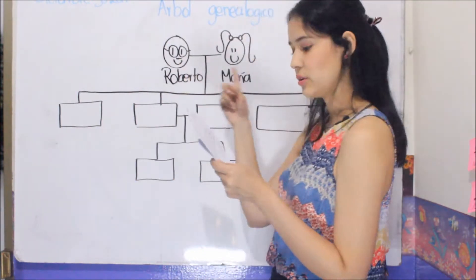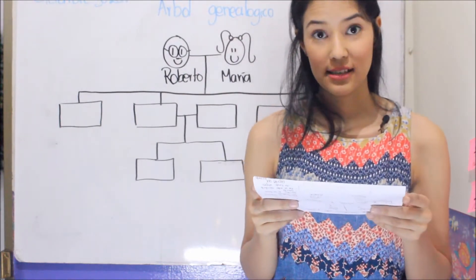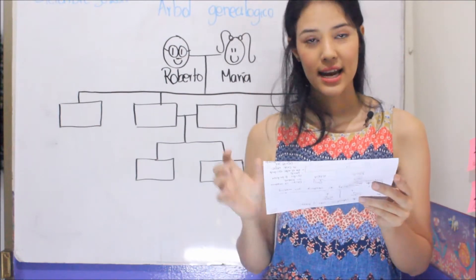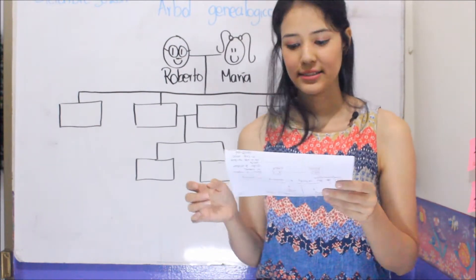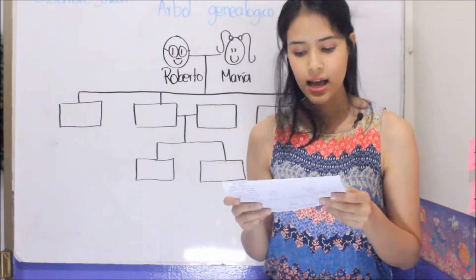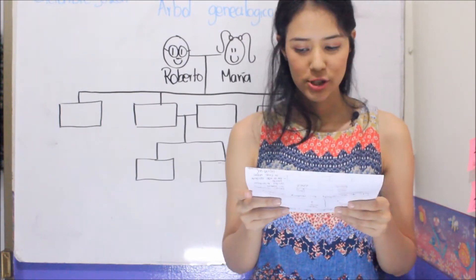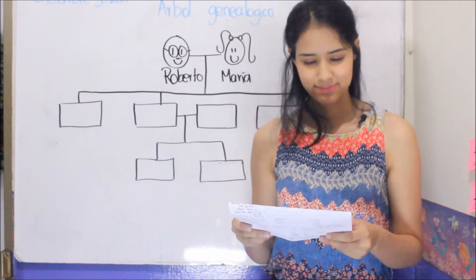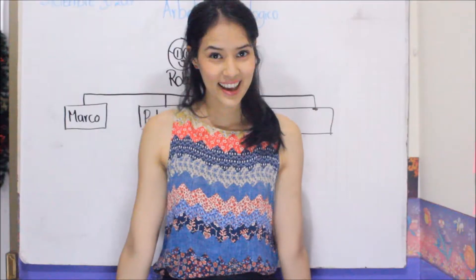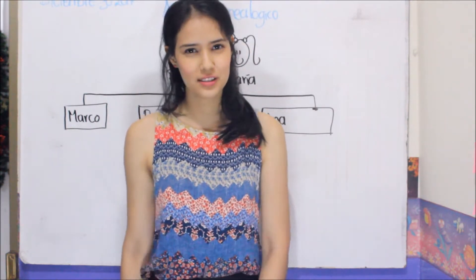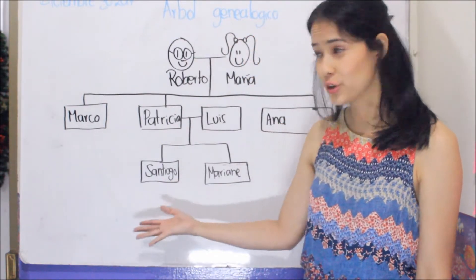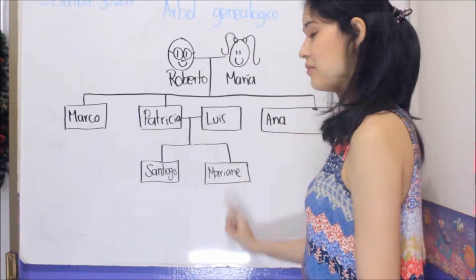Let's try. Roberto y María tienen un hijo, Marco, que es el mayor, y dos hijas, Patricia y Ana. Marco y Ana están solteros. En cambio, Patricia está casada con Luis, y tienen un hijo y una hija que se llaman Santiago y Mariane. Y ellos son sobrinos de Marco y Ana. Ok, how was it? Was it difficult? ¿Es todo difícil? Vamos a ver cómo les quedó. Here you have the answer: Marco, Patricia, Luis, Ana, Santiago y Mariane.